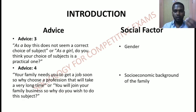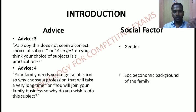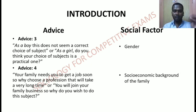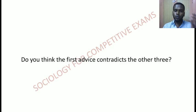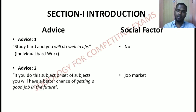Advice three is about gender. In traditional society people would say: as a boy, why are you studying this course — especially nursing — or as a girl, why are you doing mechanical engineering? So based on the social factor of gender, people give this kind of advice. Advice four is about the socio-economic background of the individual — specifically about family business and the socio-economic background of the particular family.